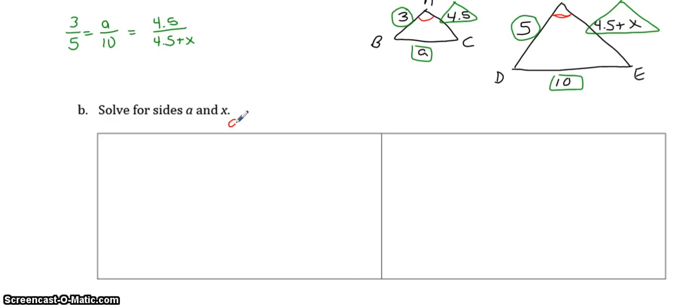So to solve for A, you're going to cross-multiply these two. So, 3 over 5 is equal to A over 10. 3 times 10 is 30. 5 times A is 5A. Divide both sides by 5. You get A equals 6.